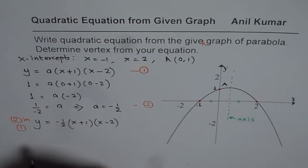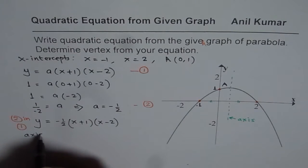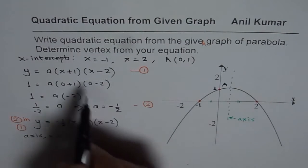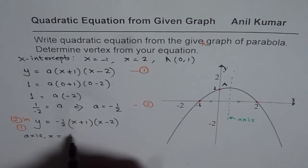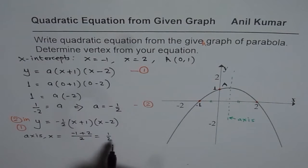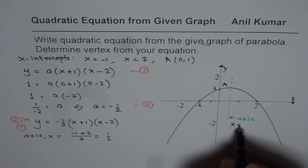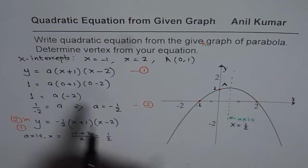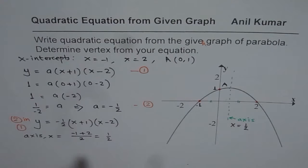So axis is at the midpoint. So axis, x-value is equals to average of these two. So average of these two x-intercepts. That means minus one plus two divided by two. And that is two minus one. So we get half. So axis is at x equals half. So we will substitute x equals half in our equation and find y-value.